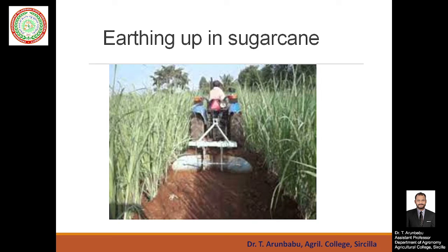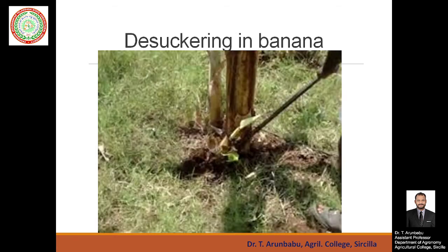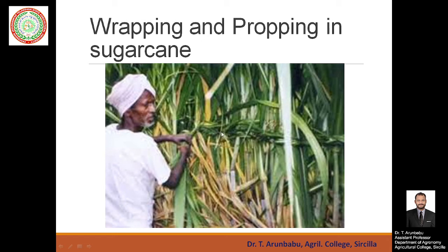You can see a few images showing intercultural operations. First, earthing up in sugarcane — keeping soil around the base of the plant to give mechanical anchorage and reduce lodging. Next, desuckering — removal of suckers from the main stem. And wrapping and propping in sugarcane — removing dried or bottom leaves, preparing them into rope-like structures, and using them to tie sugarcane sets to reduce lodging.